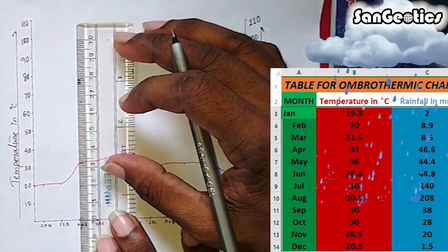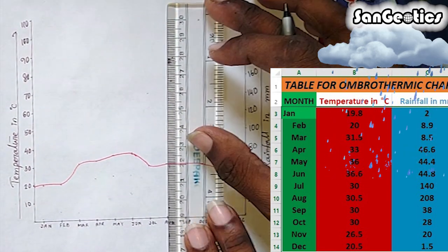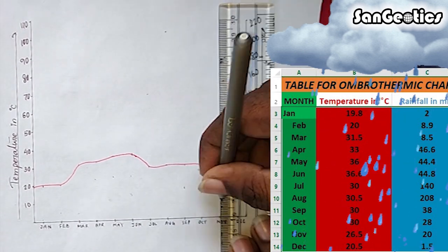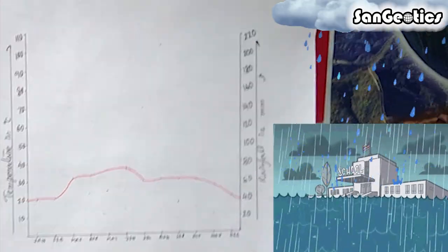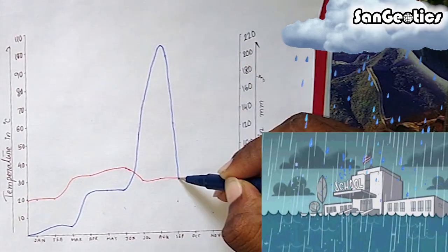Similarly, plot the rainfall data of respective months and draw a line with blue color corresponding to the rainfall data points.